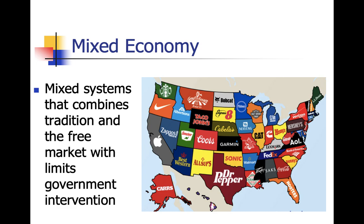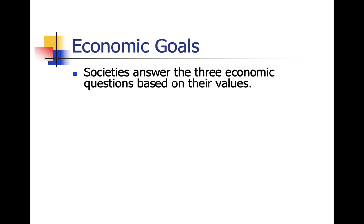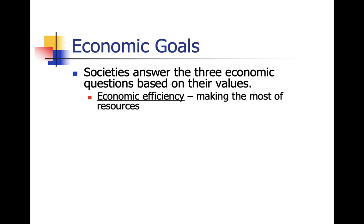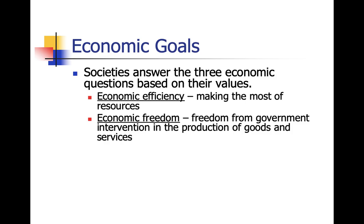Based on the three questions — what to produce, how to produce it, who consumes it — societies answer them differently, sometimes based on efficiency. The United States, for example, imports oil from Saudi Arabia because it's cheaper than drilling domestically. When it comes to freedom, you can create your own business in the US, though some states like California have more barriers to entry and less economic freedom in that regard.